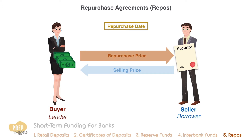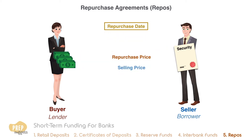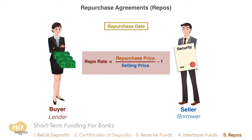A repo for one day is called an overnight repo, while an agreement covering a longer period is called a term repo. The repurchase price is greater than the selling price and accounts for the interest charged by the buyer. The interest rate implied is called the repo rate, which is the annualized percentage difference between the repurchase and selling prices. Repos are popular because the interest cost is usually less than the rate on bank loans or other short-term borrowing.